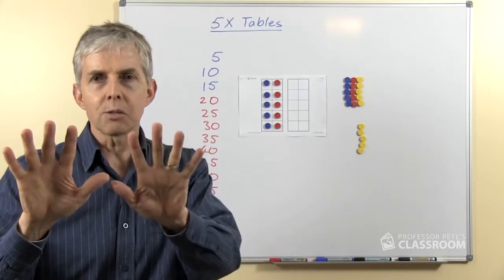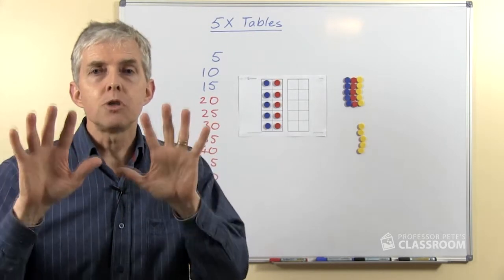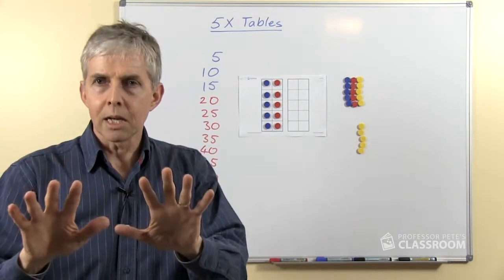If you have a second hand and put it next to it, of course that makes 10. So every time we have 2 5's, that makes 10.